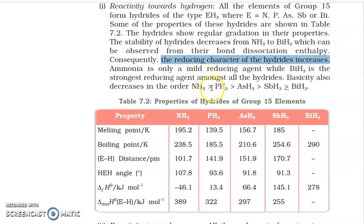Board questions are asked like: arrange NH3, PH3, AsH3, SbH3, BiH3 in order of reducing character. A specific board question is: BiH3 is the strongest reducing agent — give the reason. Because the bond length between Bi and H is very large, the Bi-H bond breaks easily. When it breaks, H is released and gets oxidized, so it behaves as a reducing agent.